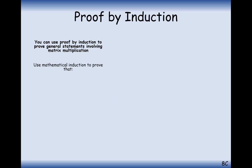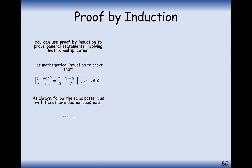How does proof by induction work with matrices? In proof by induction we're always going to be using the same structure: basis, assumption, induction, and conclusion. Generally, the way the questions have been phrased is that they're going to involve powers of matrices being multiplied together. So be prepared for a little bit of matrix multiplication here.